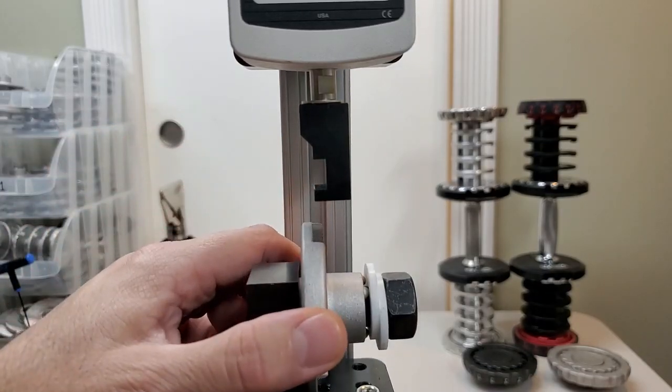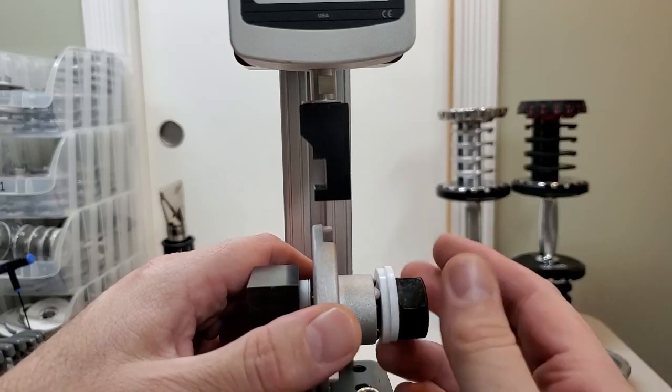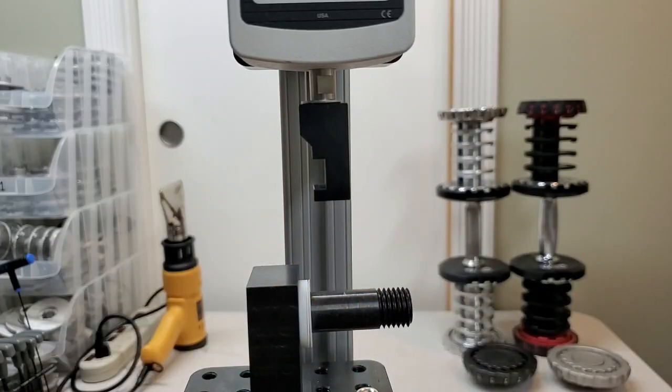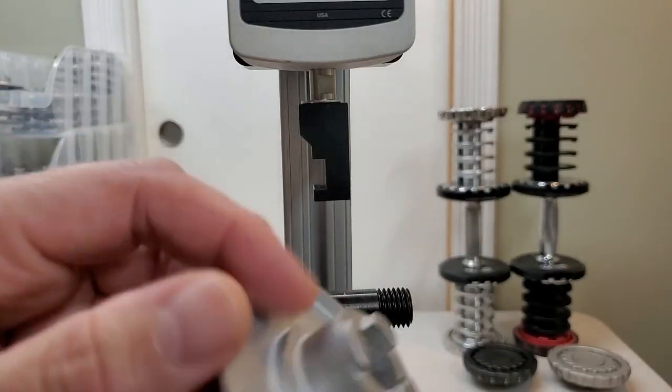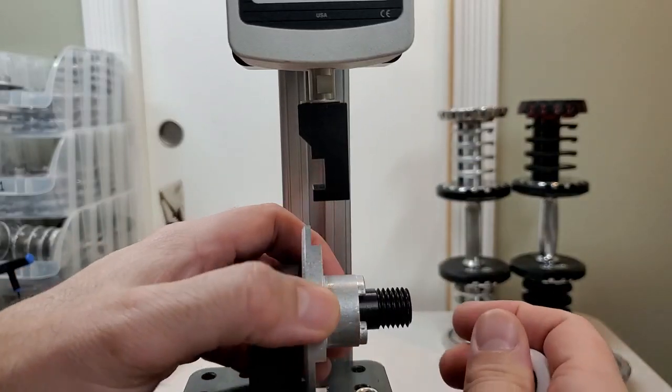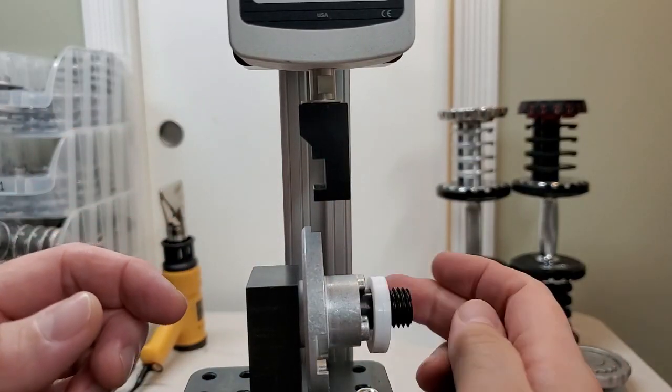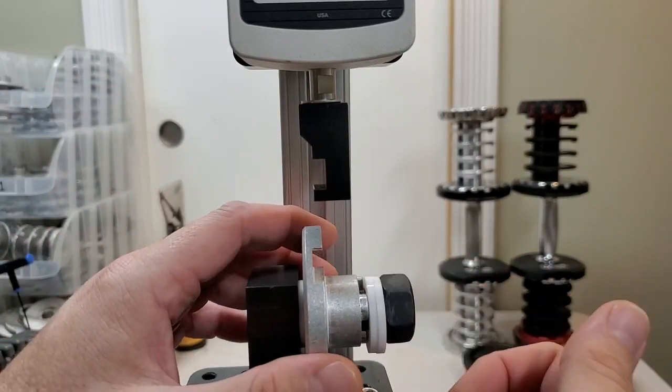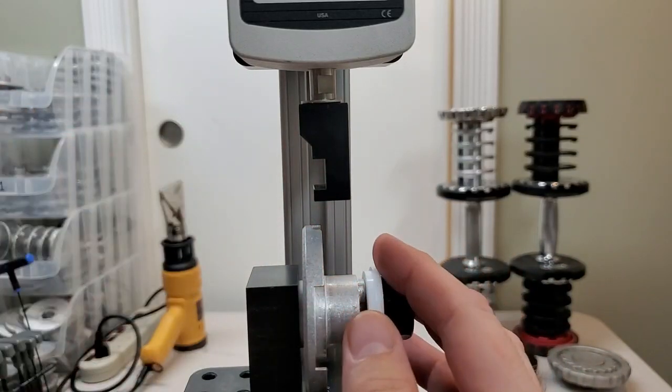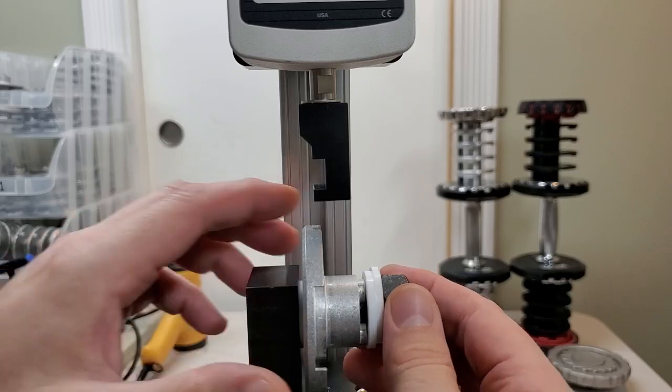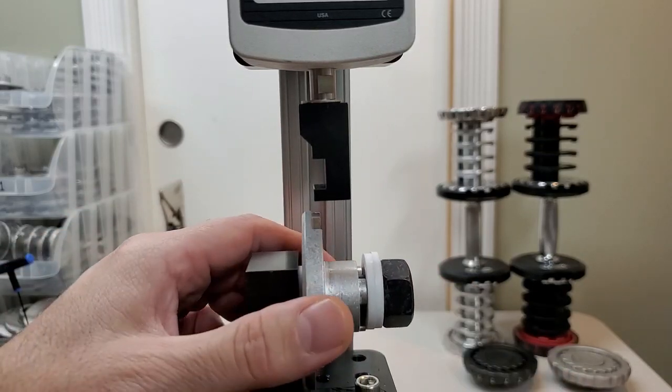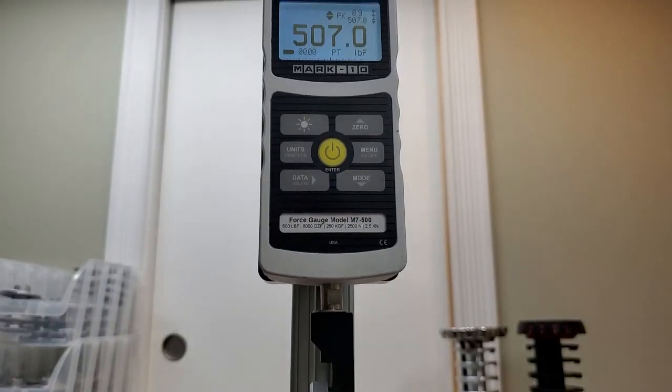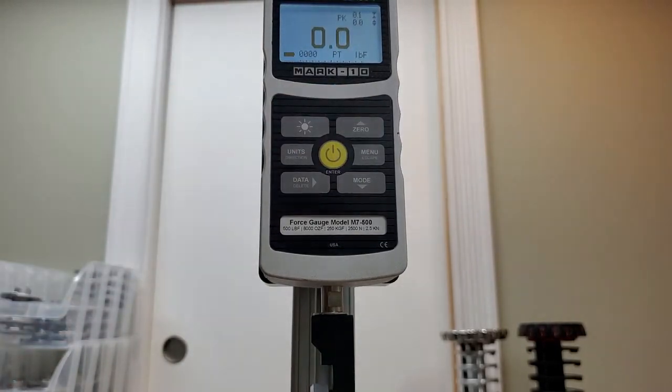So, we're going to unmount this and mount our CNC part. Now, I fully expect if the cast part exceeded 500, this part will do it no sweat because this is even stronger than the cast part, even though the cast part is plenty strong. So, we've got it mounted, freely rotating. Bring it up. Center lip is on there.